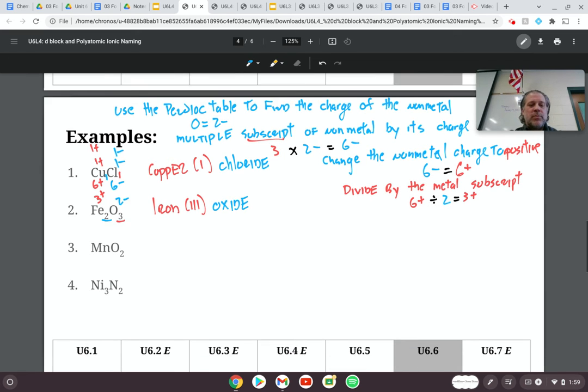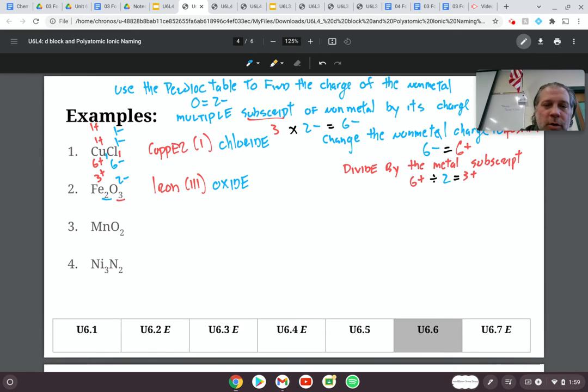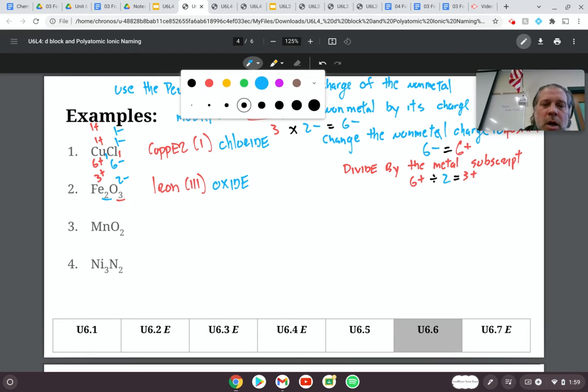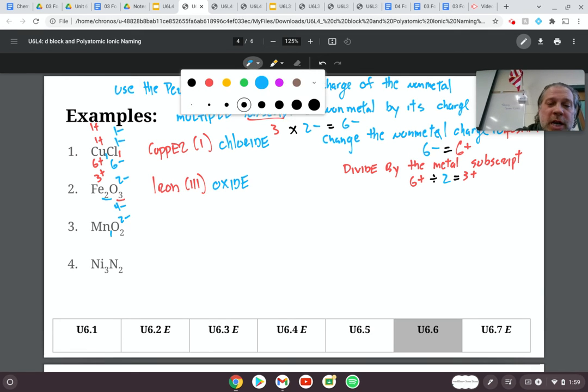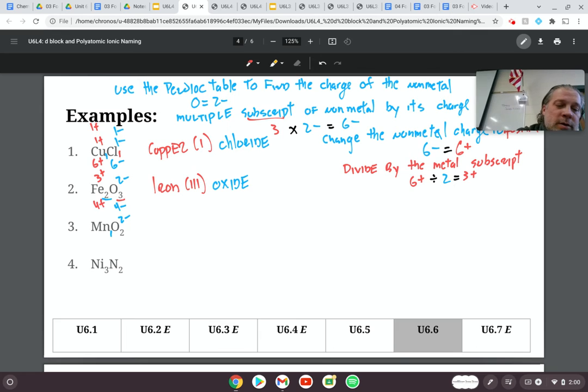Hopefully the rest of these won't be too bad. So we'll kind of go through them a little bit quicker. So the ratio here is one to two. So I know that oxygen has a charge of minus two. Minus two times two is minus four. Change that to a plus four. Divide it by one. Manganese is a plus four. So manganese IV oxide.